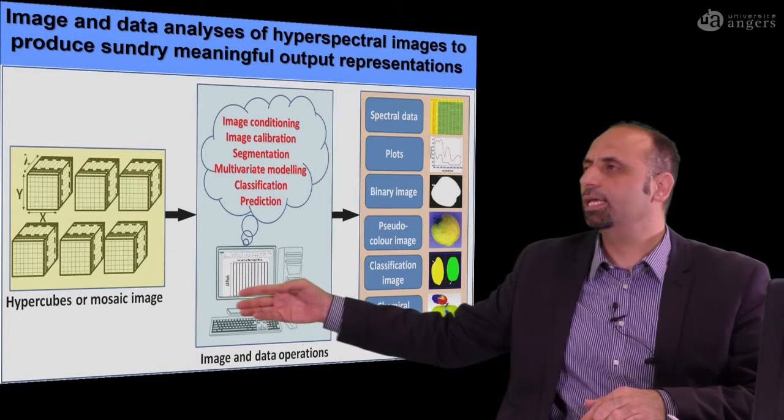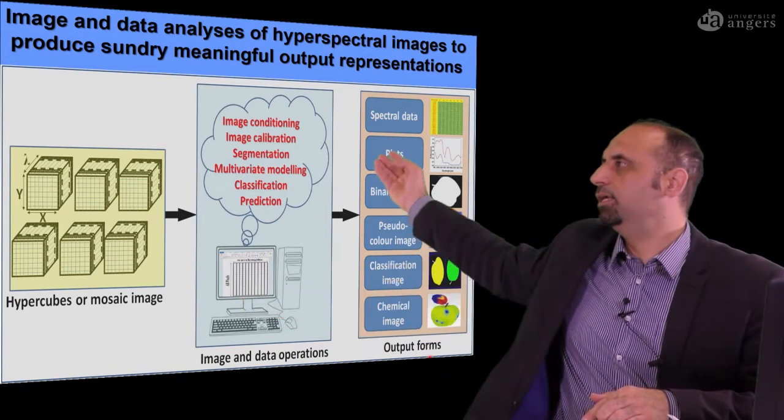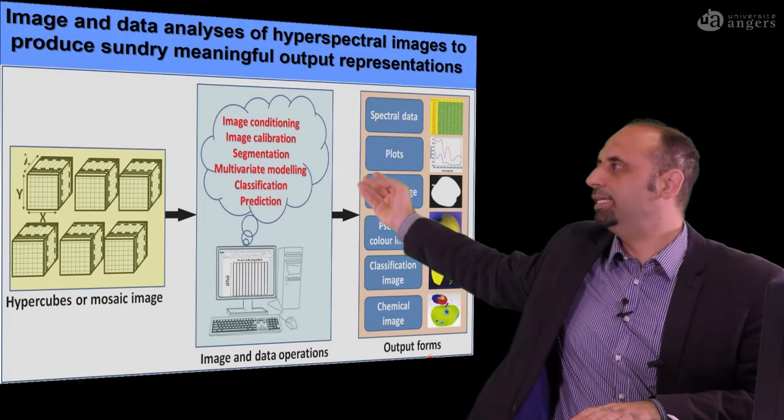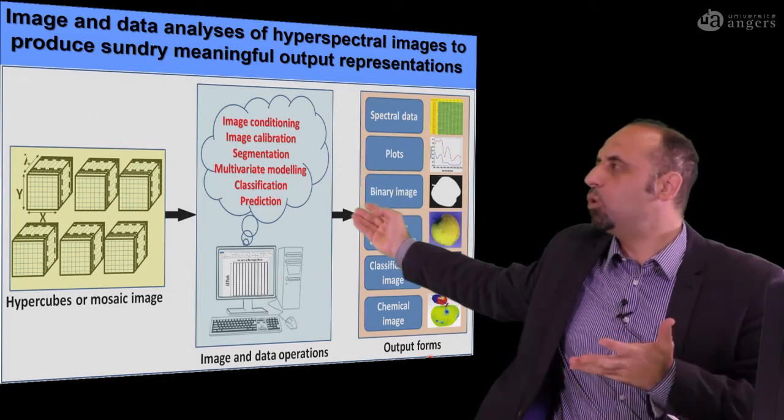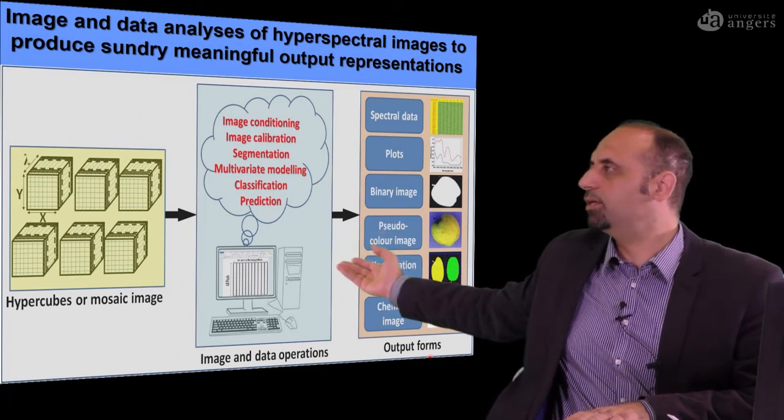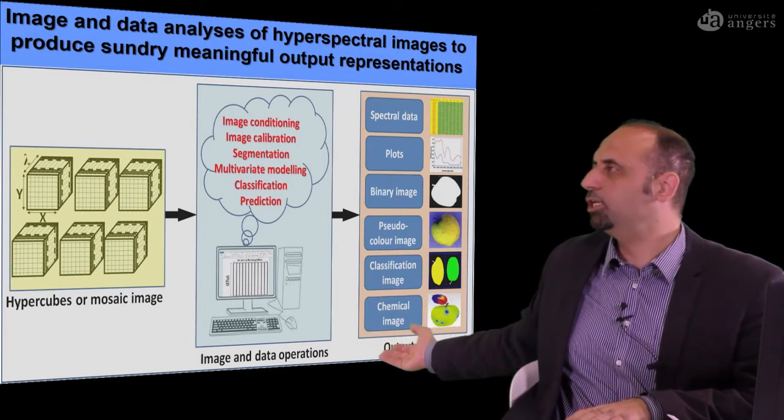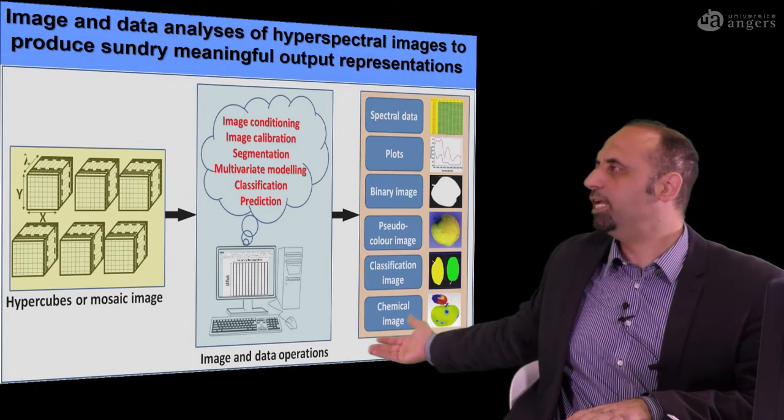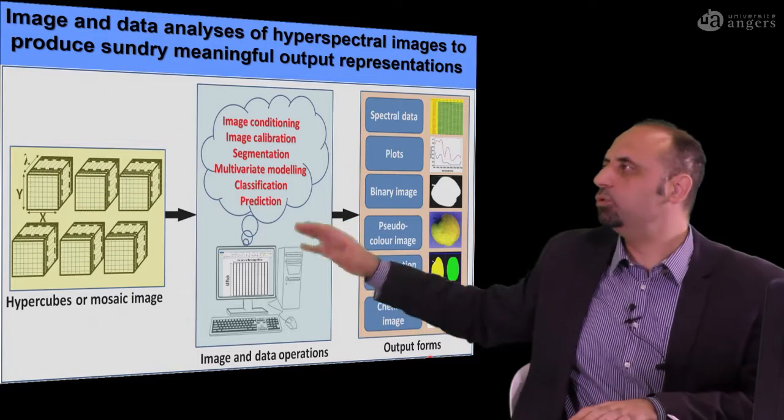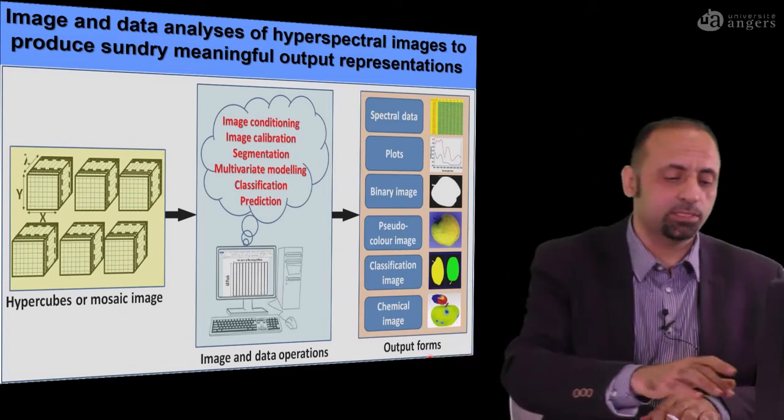And from the computer, you can represent the resulting data in different scenarios. Like here, you can put the data in the form of spectral data, like table X and Y, to plot your data, to show the binary image from different products, to see residue color images, to see the classification map or chemical image. As you see here, how to differentiate between spot to spot in the same object. This is a scenario you need to keep in mind all the time when you deal with information coming from hyperspectral imaging.